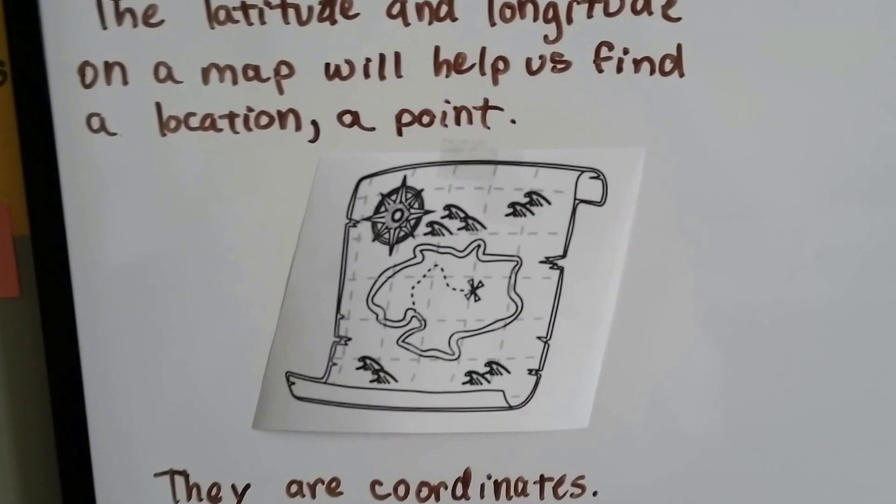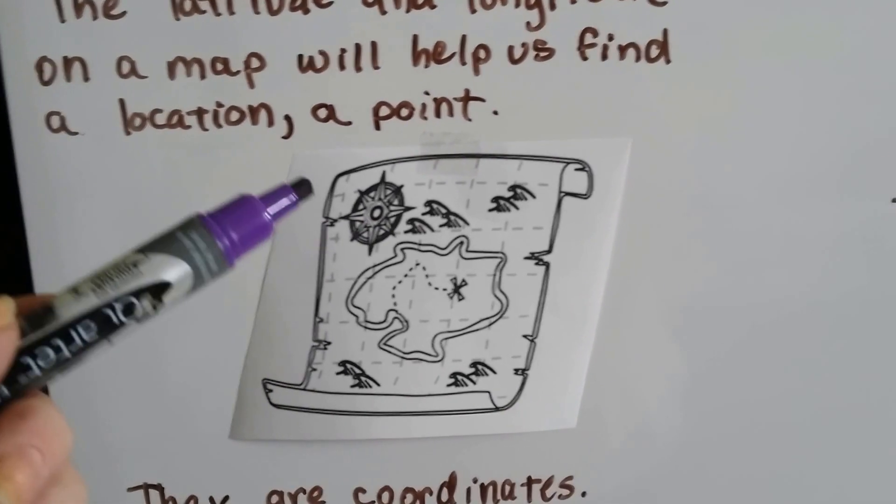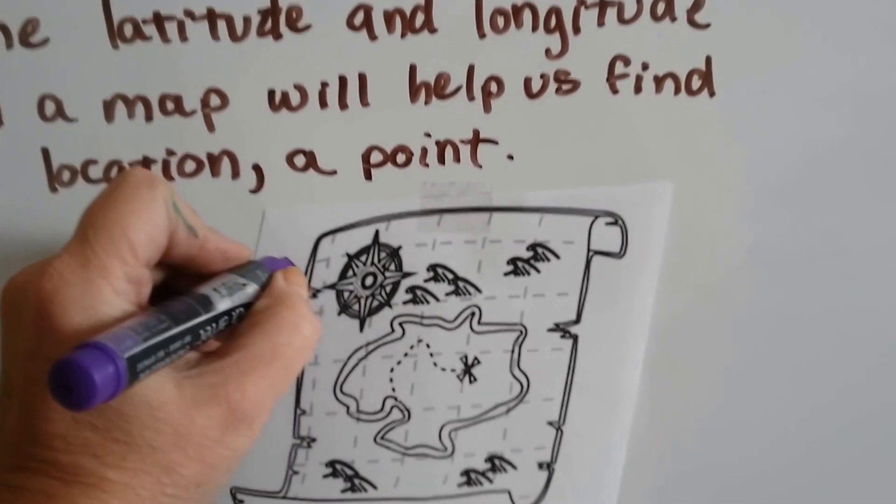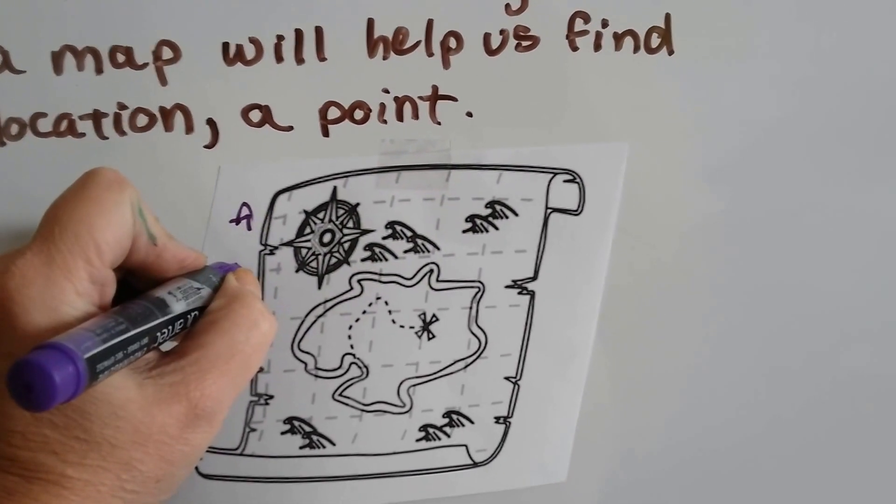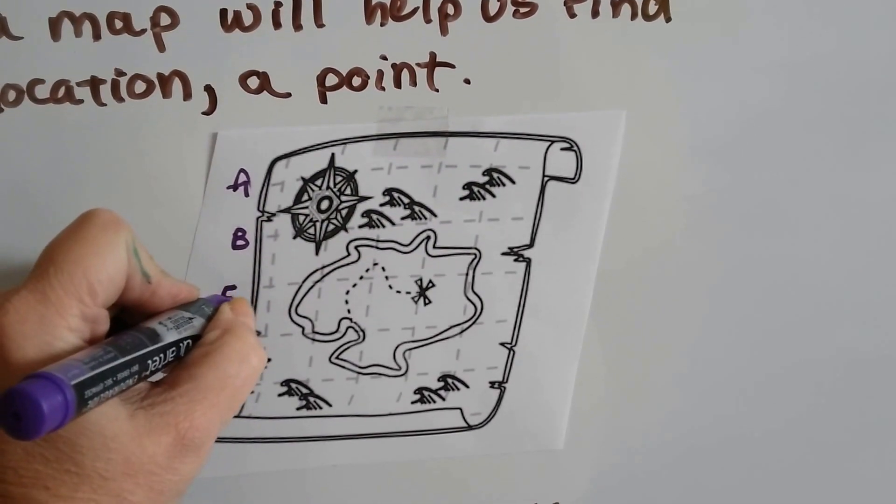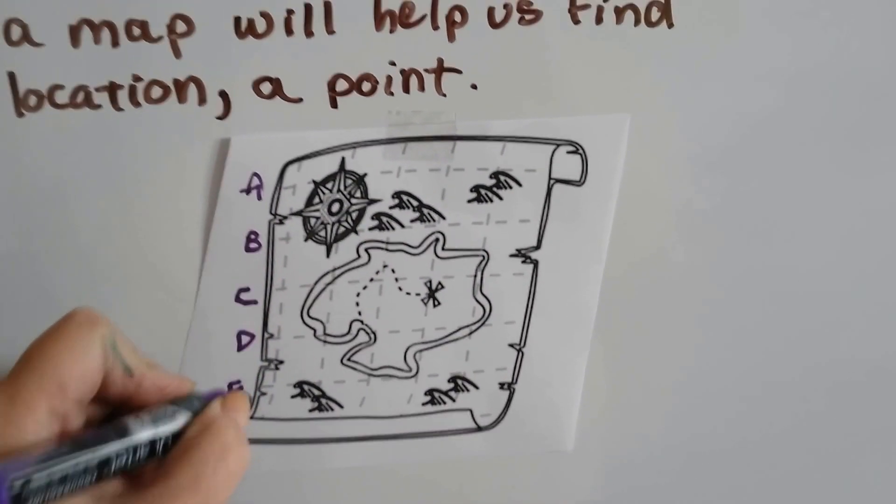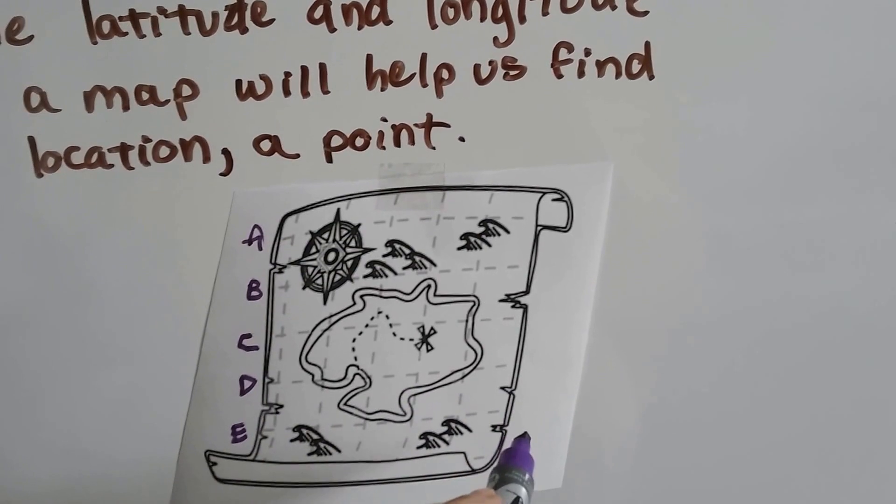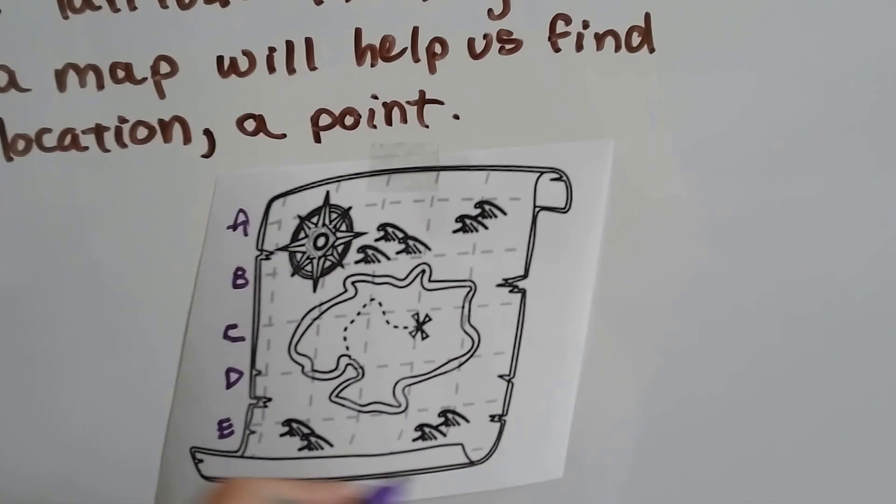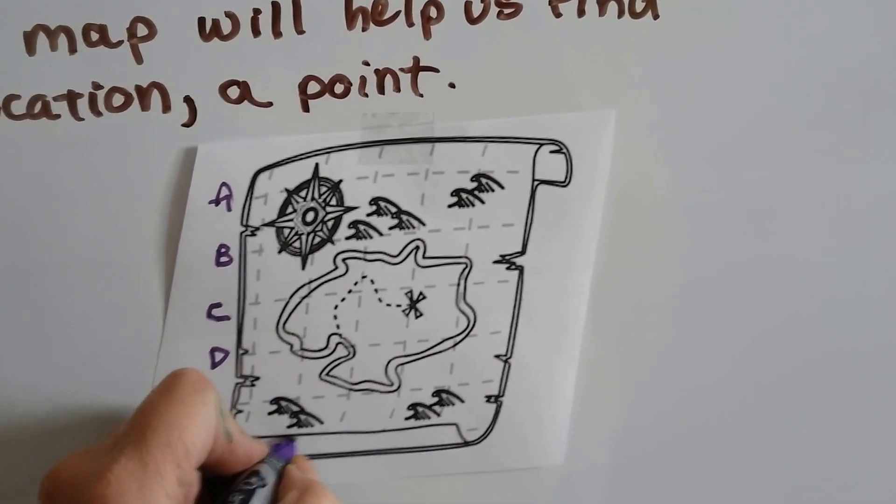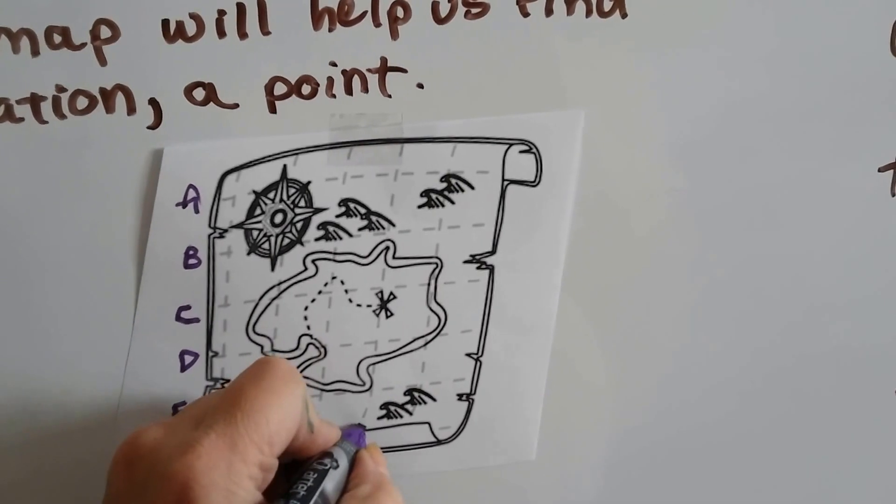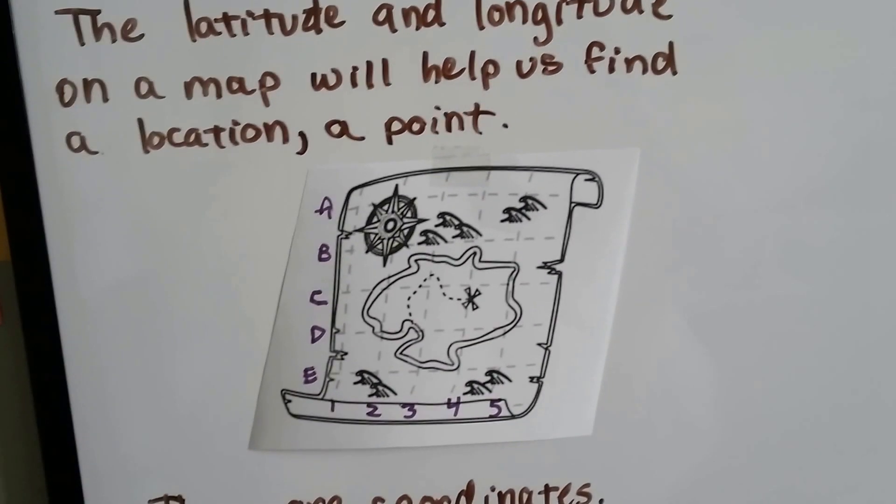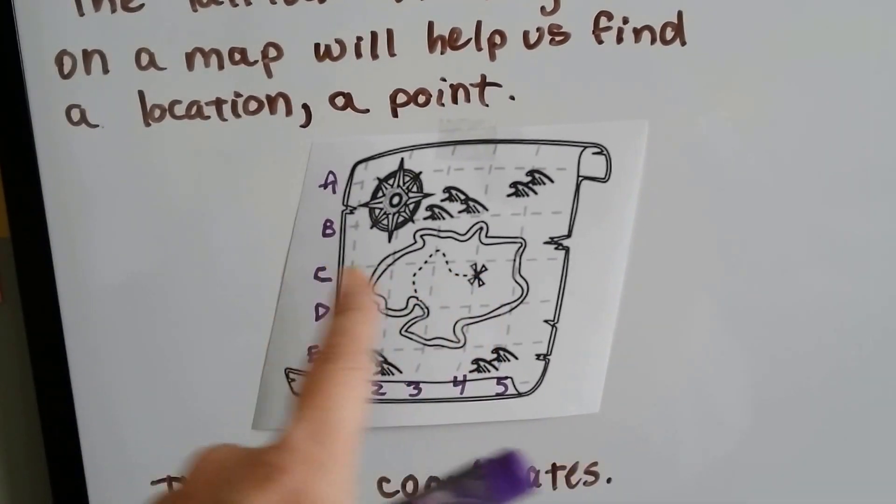Even on a treasure map, if it is A, B, C, D coming down this way, let's say, it's like A, this line's B, this line's C, this line's D, this line's E, and then these are numbered 1, 2, 3, 4, 5 coming across. You'd be able to say where the treasure is. It's close to 4 and C, isn't it?